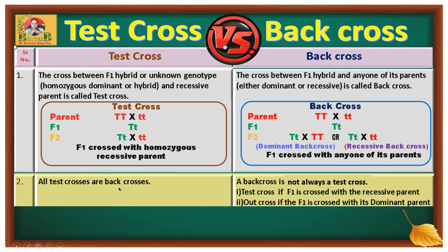Point number two: all test crosses are back crosses, because in all test crosses, the F1 hybrid is back crossed with the recessive parent, so they are back crosses. On the other hand, a back cross is not always a test cross. A back cross is only a test cross if F1 is crossed with the recessive parent, and a back cross is an out cross if the F1 hybrid is crossed with the dominant parent. This is visible in the illustration — the first one is a dominant back cross and the second one is a recessive back cross.